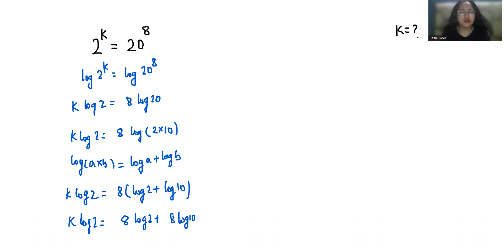Log 10 is 1, so 8 times 1 is 8. So k log 2 equals 8 log 2 plus 8. k equals 8 log 2 plus 8 by log 2.